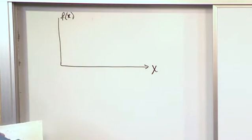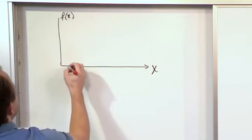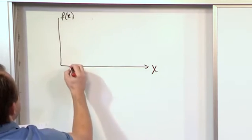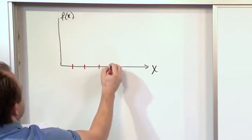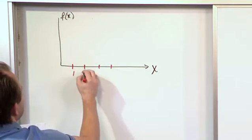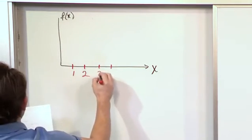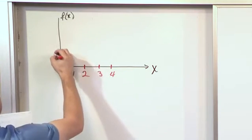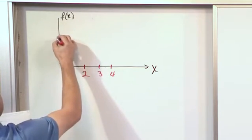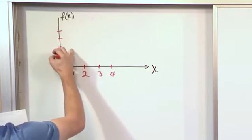Here we have a graph with the x-axis and f(x). On the x-axis we have values 1, 2, 3, 4, and on the y-axis we also have 1, 2, 3, 4.